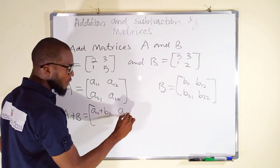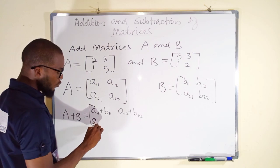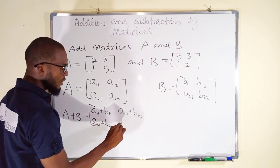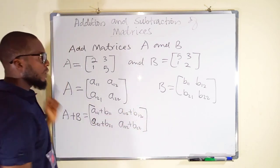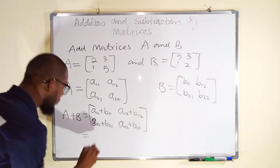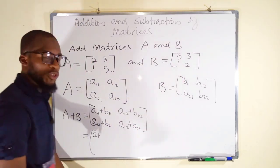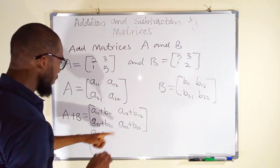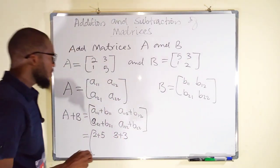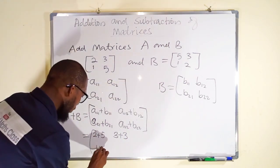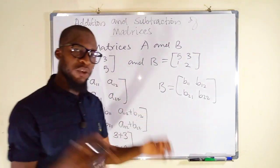Add A one two and B one two together. Then you add A two one and B two one together, and A two two and B two two together. Now let us substitute: A one one is two, and B one one is five. A one two is three and B one two is three. Then we have one plus one, and five plus two on the other side. You must add them together with their corresponding element at the same position.